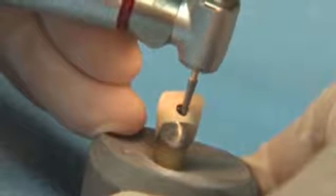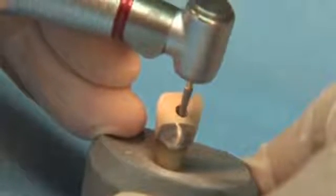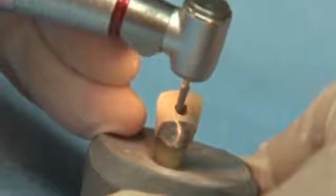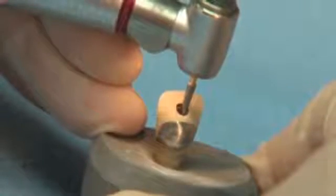EndoSafe End has no step at the tip. This burr will prevent ledging of the axial walls, and the RoundSafe End prevents perforation of the furcation areas.